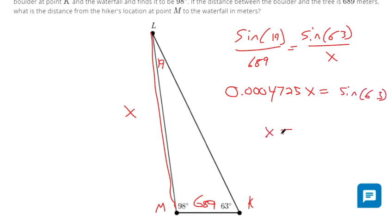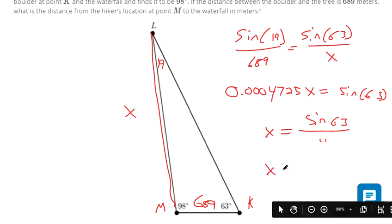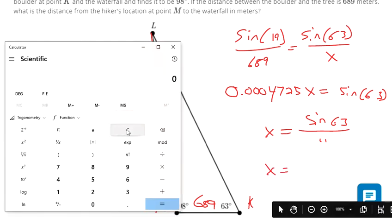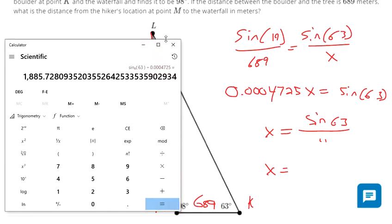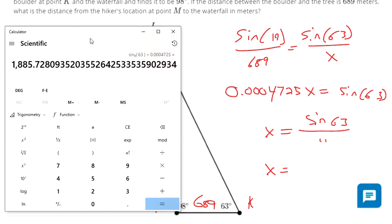And then to finish getting x, we just divide sine of 63 by that big long decimal. All right, so x is going to be sine of 63. So here's 63 trig sine divided by 0.0004725. So that distance is 1185.72 meters.